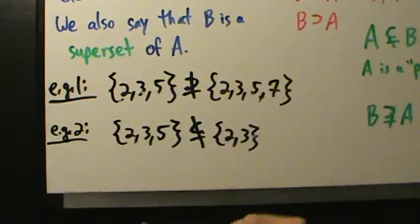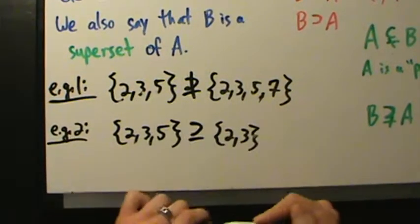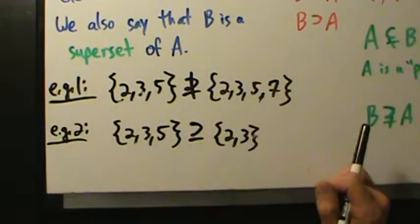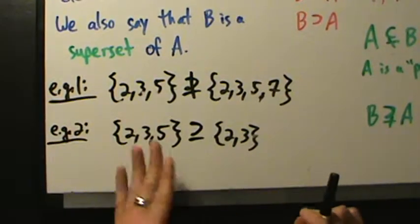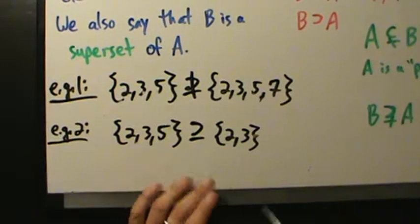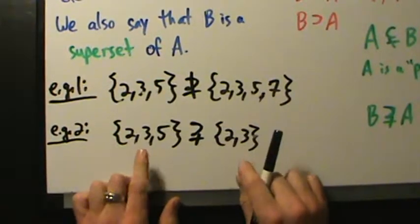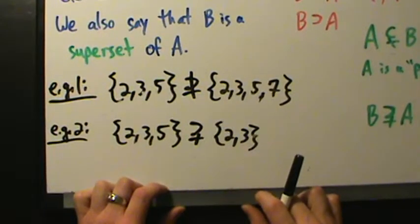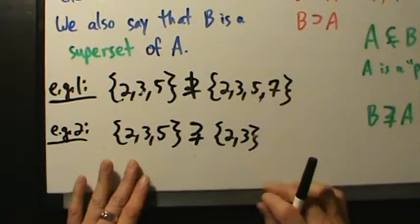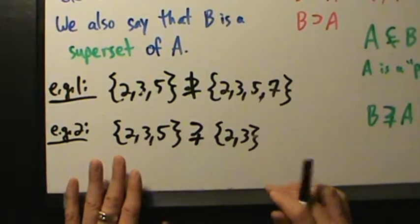Note that it does go the other way though: {2, 3} is a subset of {2, 3, 5}, because every element in {2, 3} is also in {2, 3, 5}. But it does not go the other way. So be very careful — subset relationships are directional. We could put a proper subset slash through since the sets are different.